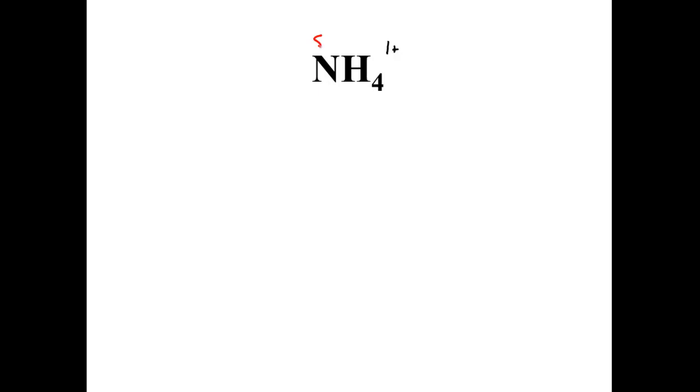Alright guys, ammonium. Let's check this out. We got five electrons from nitrogen in its outer shell. Hydrogen has one, and there's four of them. So all together, we have nine total electrons to place. Draw my Lewis dot skeleton structure. That comes next.